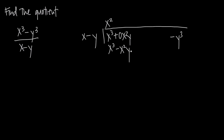Now we can subtract x squared y from zero x squared y. When we subtract, we always just change the signs and then add. So x cubed plus negative x cubed is zero — those two cancel. Zero x squared y plus x squared y gives us a single x squared y.